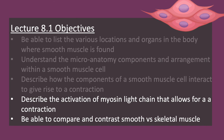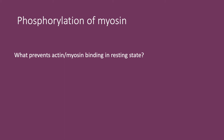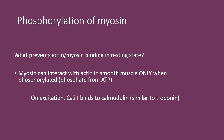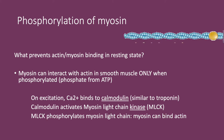Smooth muscle thin filaments do not have troponin, and although they have tropomyosin, it does not block the cross-bridge binding site. So what prevents actin and myosin from binding in a resting state? The myosin can interact with actin in smooth muscle only when it has been phosphorylated — getting that phosphate from ATP. Upon excitation, calcium binds to calmodulin — similar to the process with troponin — and calmodulin activates myosin light chain kinase (MLCK). MLCK phosphorylates the myosin light chain, allowing the myosin head to then bind actin.